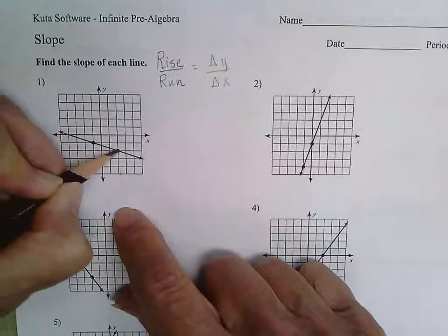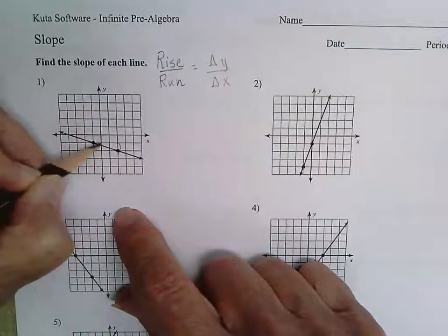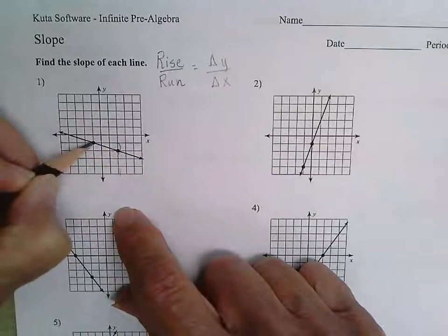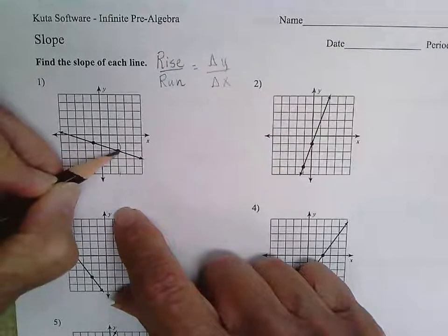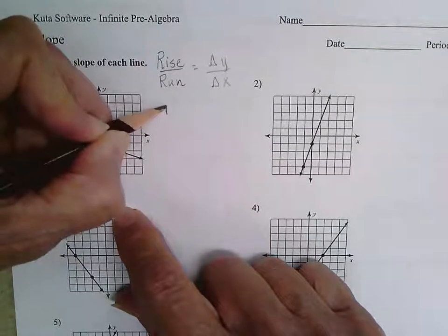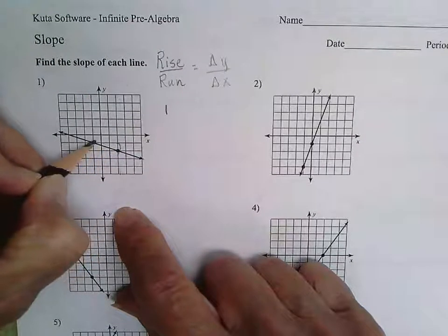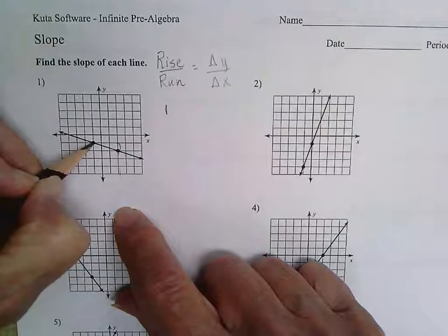We are going to start from the bottom point and we are going to go up until we reach the horizontal line that the other point is contained on. So we would be going up one. So the rise for this one is one. And then we are going to count how many do we need to go over to get to the next point.